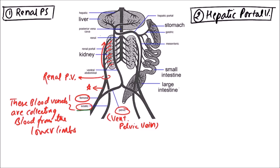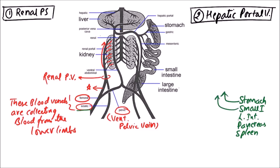The hepatic portal vein starts from the gut, mainly from the stomach, small intestine, large intestine, pancreas, and even the spleen. These organs are drained by some veins which finally fuse to form the hepatic portal vein.